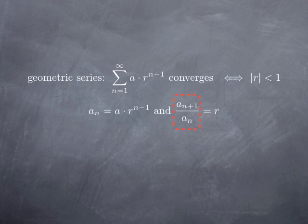So if we look at this ratio of two consecutive terms, we might ask: if the asymptotic behavior is similar to that of a geometric series — in other words, if the limit of this ratio as n goes to infinity is r — then maybe for n large we have behavior similar to that of a geometric series. And so, in terms of convergence of the series, maybe we can expect it will behave similarly to a geometric series of common ratio r.